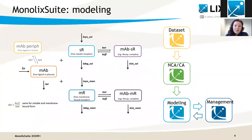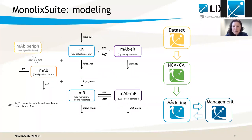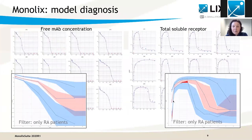So you go to your virtual laboratory — that is Monolix with Applications — and develop a model. This is a target-mediated drug disposition model, which describes the concentration of the drug, soluble receptor, membrane-bound receptor, and the complexes. In Monolix, you estimate model parameters and with different diagnostic tools and plots, you verify that the model correctly fits this single-dose phase one study.